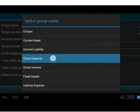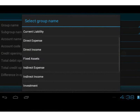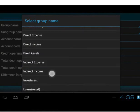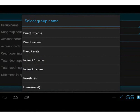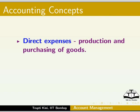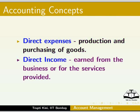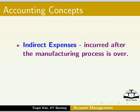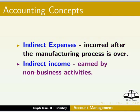Accounts under the groups direct expense, direct income, indirect expense, and indirect income will have zero opening balance. Direct expenses are expenses related to production and purchasing of goods. Direct income is earned from the business or for services provided. Indirect expenses are expenses incurred after the manufacturing process is over. Indirect income is earned by way of non-business activities — for example, sale of old newspaper or sale of cartons.